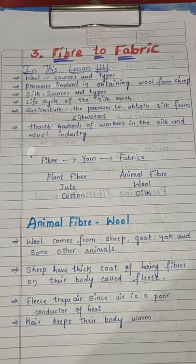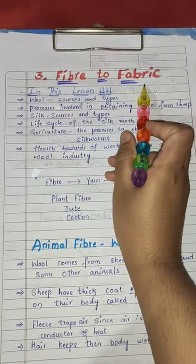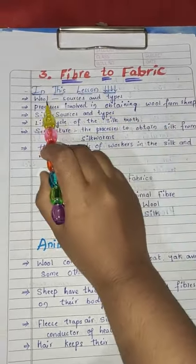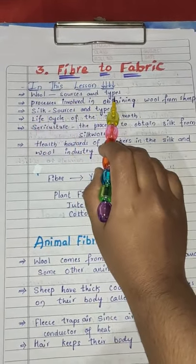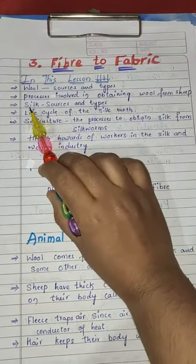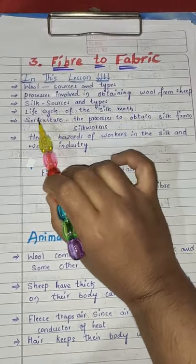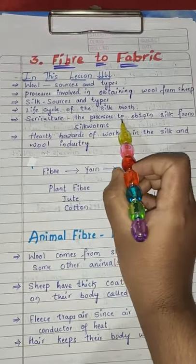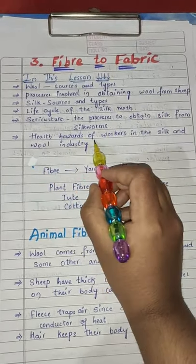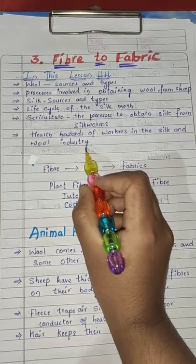Hello children, today we are going to study about your third lesson, that is Fiber to Fabric. In this lesson, we are going to study about the following points: wool — sources and their types; the process involved in obtaining wool from sheep; silk — sources and their types; the life cycle of the silk moth; sericulture — the process to obtain silk from silkworms; and health hazards of workers in the silk and wool industry, that is occupational hazards.